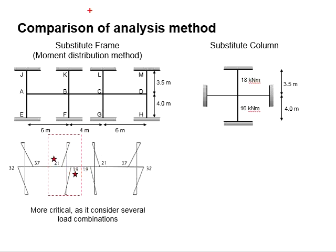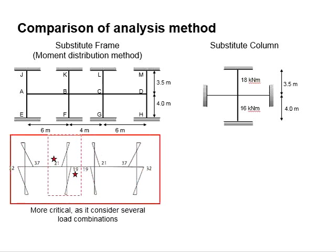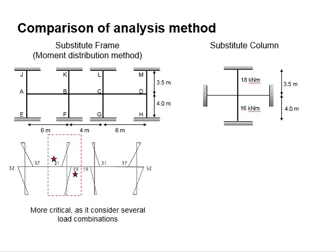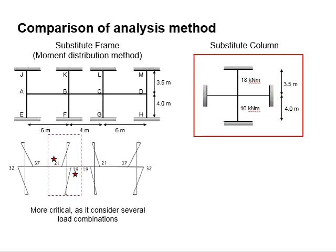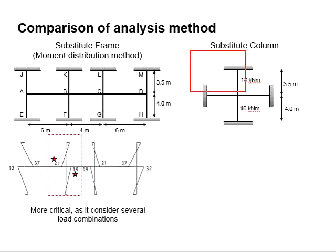The main reason is that the frame analysis considers several different types of load combinations, and the numbers are obtained based on the worst case scenario. As for the substitute column frame, only one load case is used.